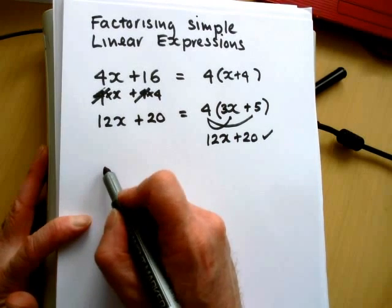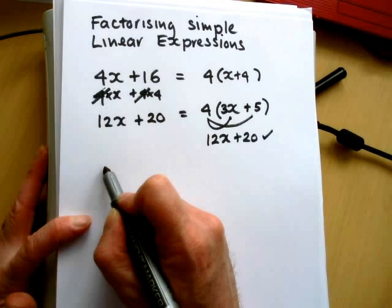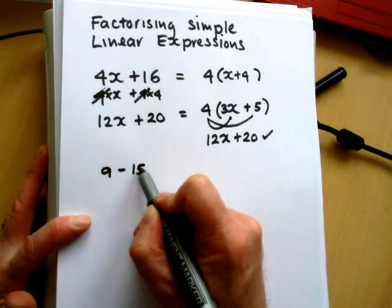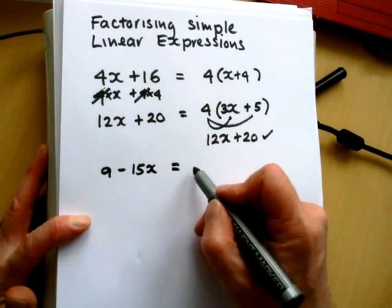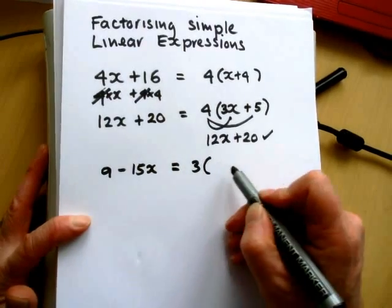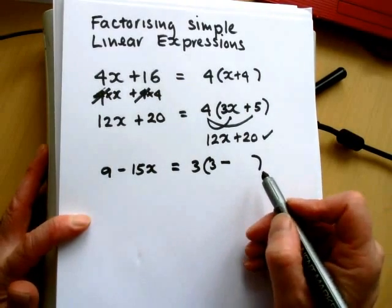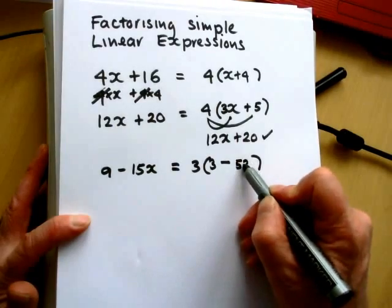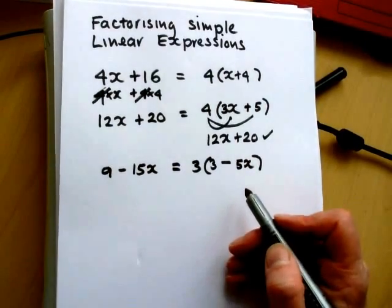That doesn't really make a lot of difference if we go into negative numbers. Suppose we had 9 minus 15x. Can we factorize that? Well, 3 goes into both 9 and 15. 3 threes are 9. Leave that minus sign where it is. We'll need three fives to make the 15, and keep the x. And again, you could check that by expanding.